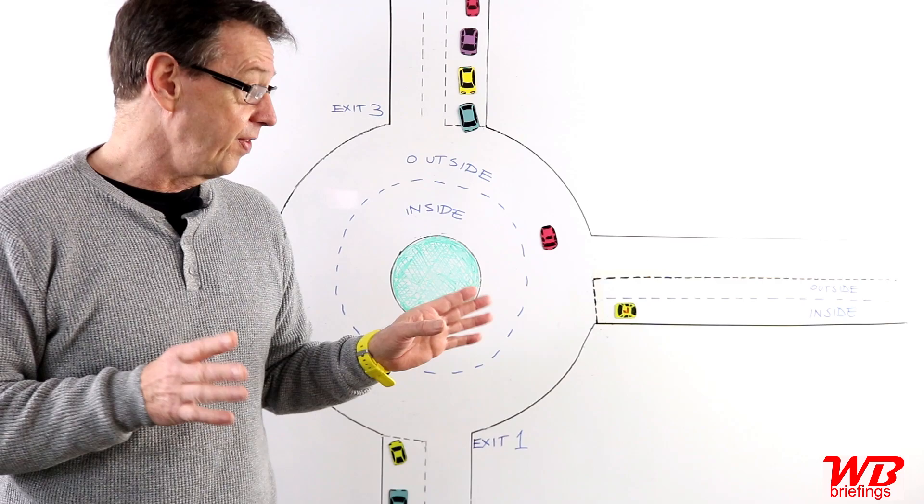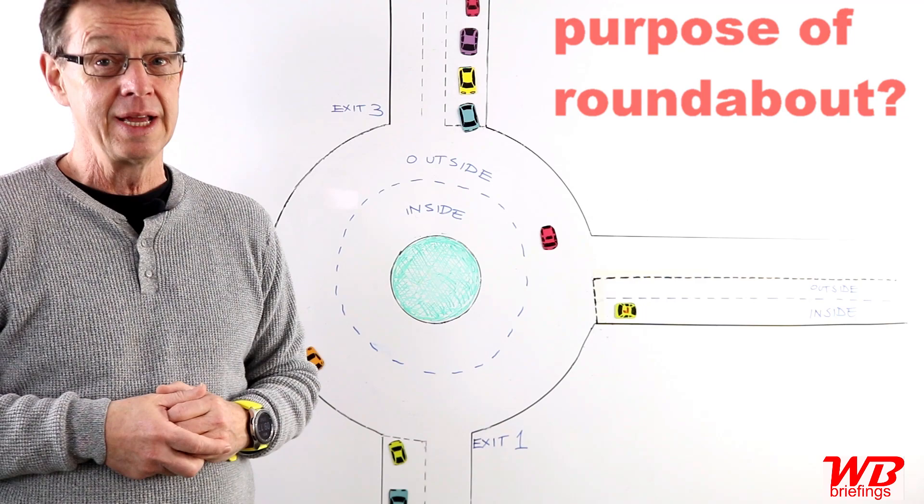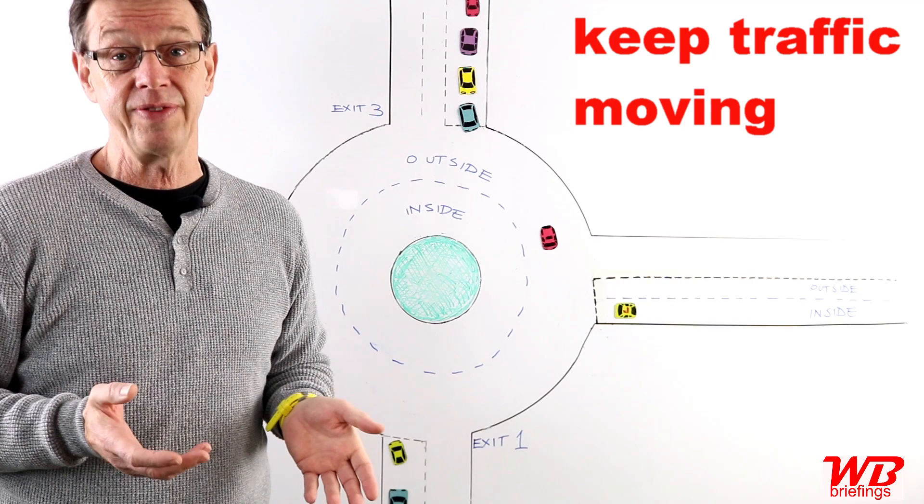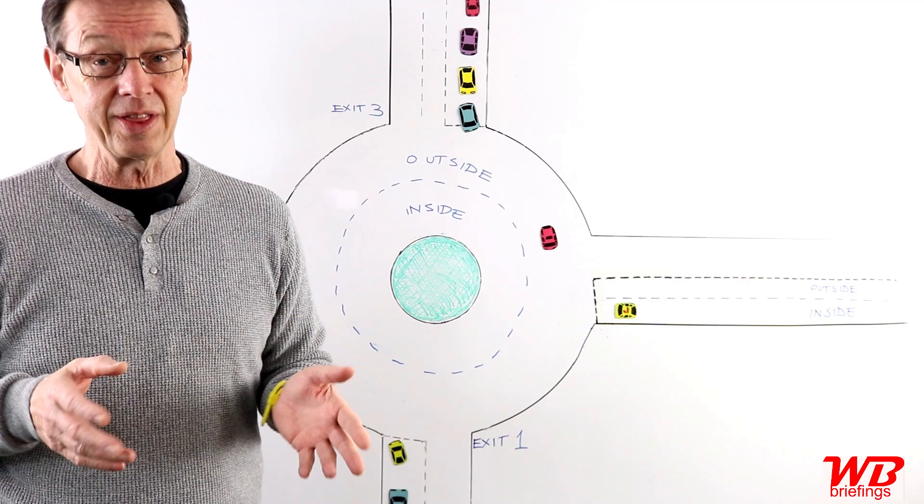So the first question is, what is the point of a roundabout? What's the purpose? Why do planners put in a roundabout? Well, the intention of a roundabout is to slow traffic down where roads meet, to keep traffic moving. It's important to bear that in mind. It's not there to stop traffic.